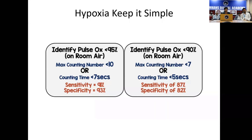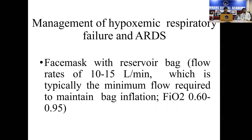Any patient who has a saturation of less than 90% and who cannot make sentences or cannot count numbers up to 5 to 7 is going to indicate that this patient is in respiratory distress. What is advised is to put a simple face mask — or what we call a face mask with a reservoir bag — where we need to give 10 to 15 liters of oxygen. We might be achieving FiO2: when you breathe room air it is 21%, but with an oxygen flow of 10 to 15 liters in a non-rebreathing mask, FiO2 can be achieved up to 0.9 to 0.95.